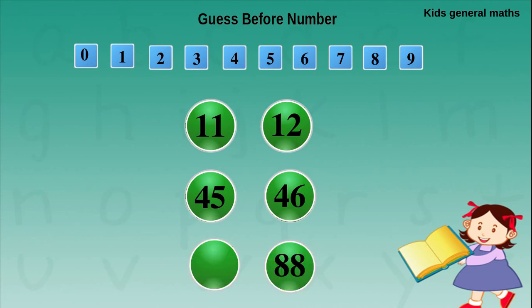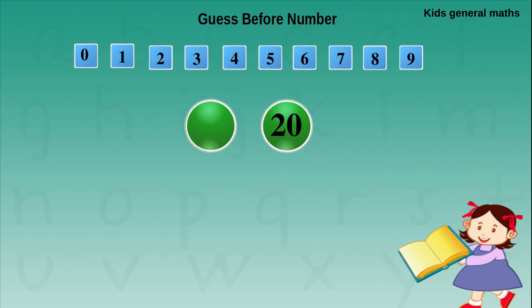Next they are given 88. The first digit should be written as it is. For the next digit we are going to find the before number. Before 8 is 7, so before 88 is 87. Next they are given 20. Before 20, what is it? For 0 we are going to write it as 9. For 2 we are going to find the before number — before 2 is 1. So before 20 is 19.